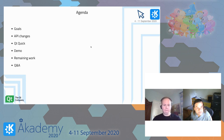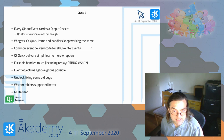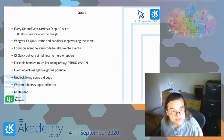QMouseEvent had a mouse event source which we added in Qt 5.4, and we thought that would help figure out cases when a mouse event is synthesized from touch. But it turned out that's not really enough, so in Qt6 I wanted to have a whole device hierarchy where every input event has the device it came from. You'll be able to get all possible information about the device and tell if a mouse event really comes from a touch screen.